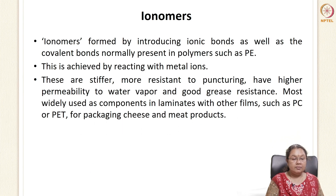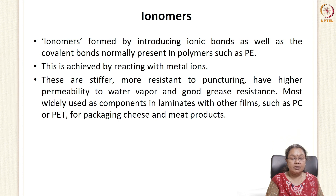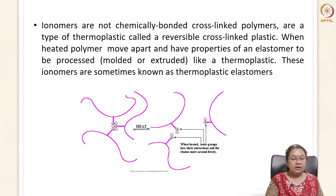Ionomer is another polymer formed by introducing ionic bonds and covalent bonds in polymers such as polyethylene. This is achieved by reacting them with metal ions. Such ionomers are stiff and resistant to puncture, have high permeability to water vapor, and good grease resistance. These are mostly used as laminates with other films like polycarbonate or PET, and are used in packing cheese and meat products.